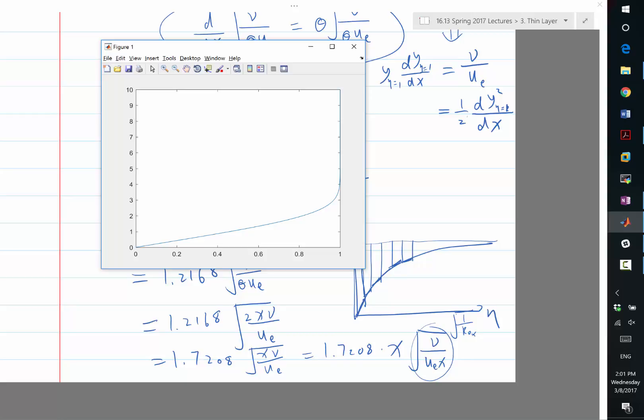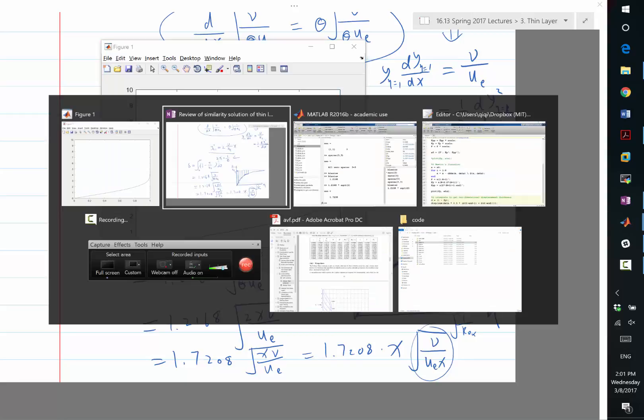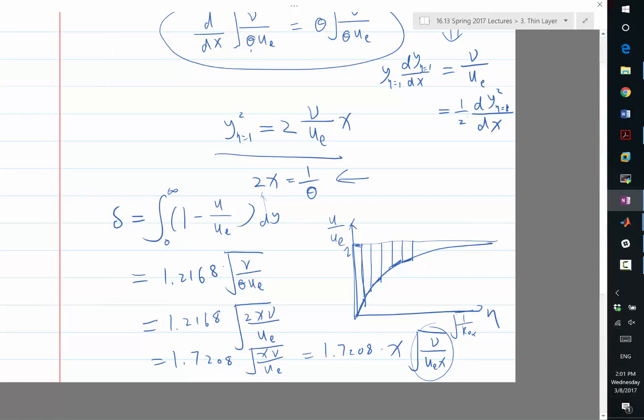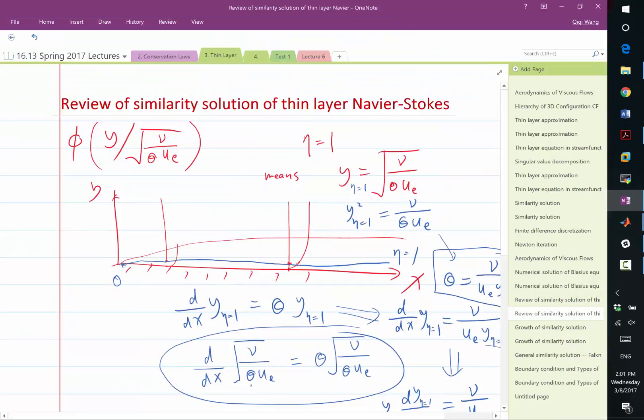So the reason it's called displacement thickness is because we will study this later. If you think of a streamline outside the boundary layer...